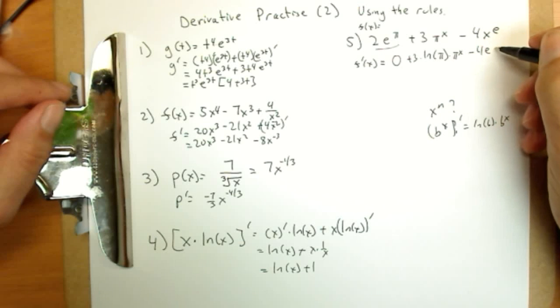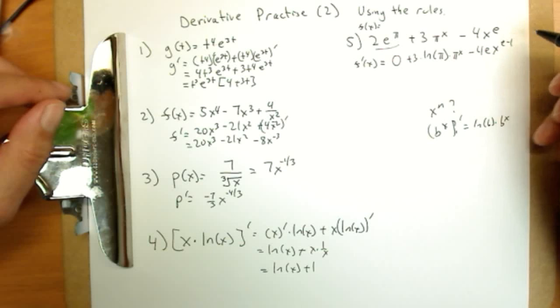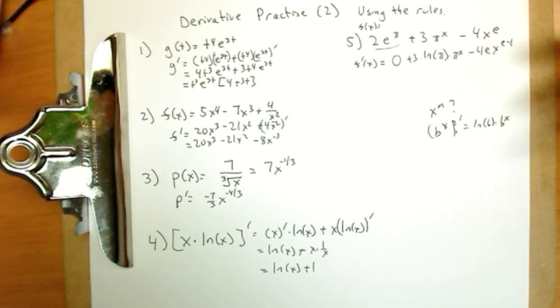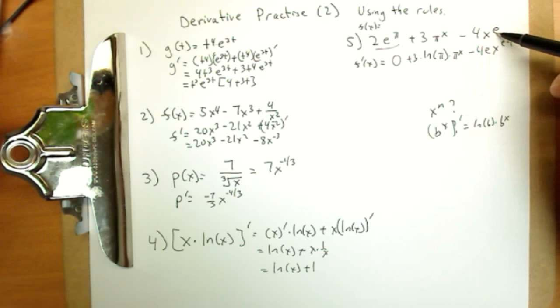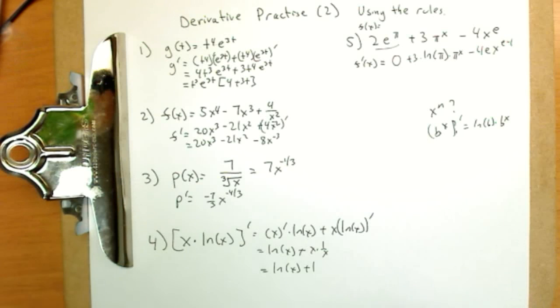So minus 4e x to the e minus 1. E is just a number, approximately 2.718. Well, pi is just a number as well. So we treated pi as the number in the base and e is the number in the power as appropriate in these two rules. Hopefully this has been a helpful review.